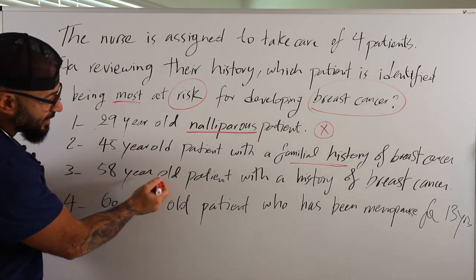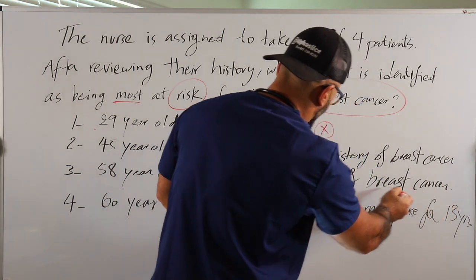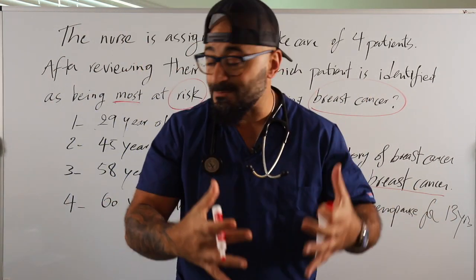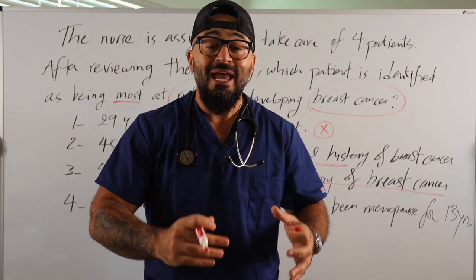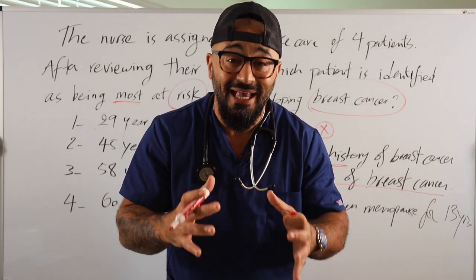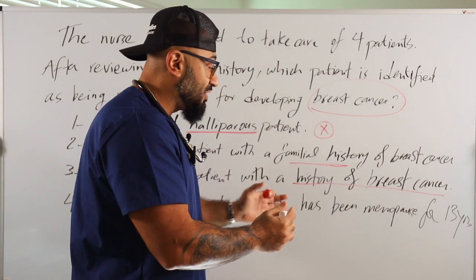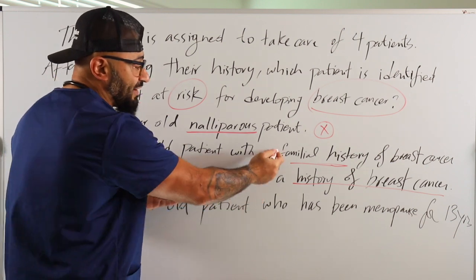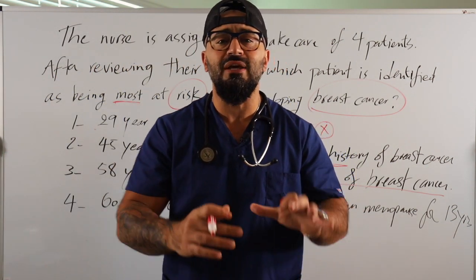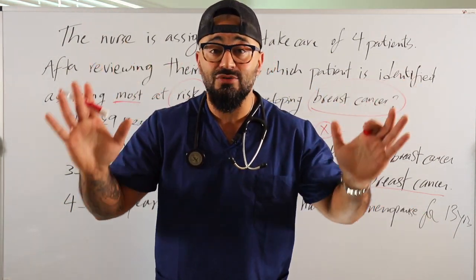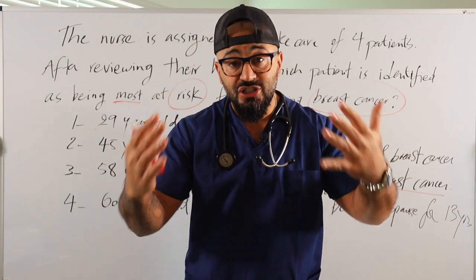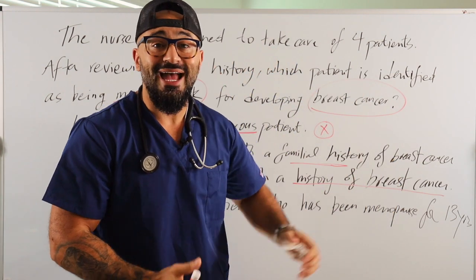Option number three: a 58-year-old patient with a history of breast cancer. She's 58 years old and she had cancer before at a later age. She is a higher risk than familial history because the risk for relapse is higher. Usually within five years it's the highest risk for relapse. After five years there's less chance, but they're still at a higher risk than a patient who just had familial history.